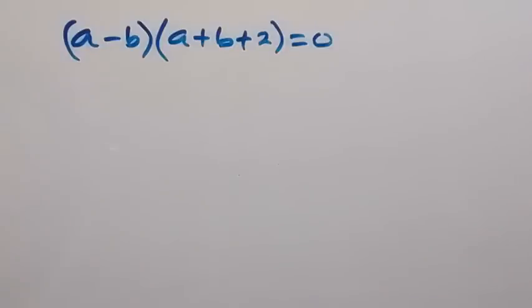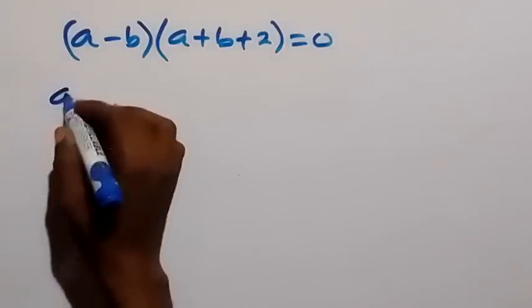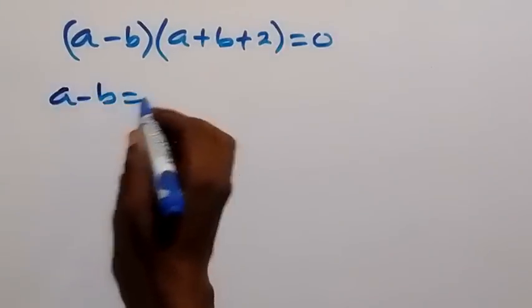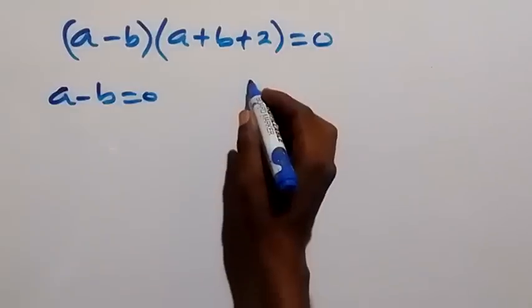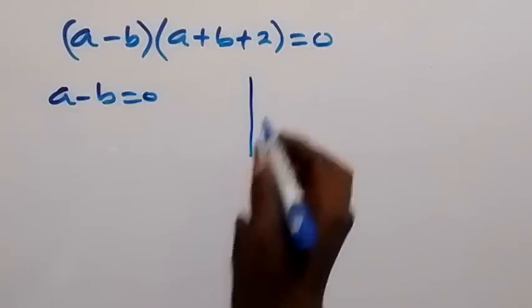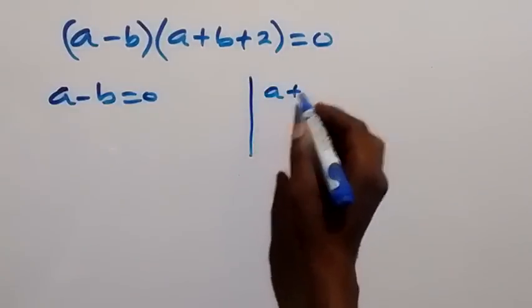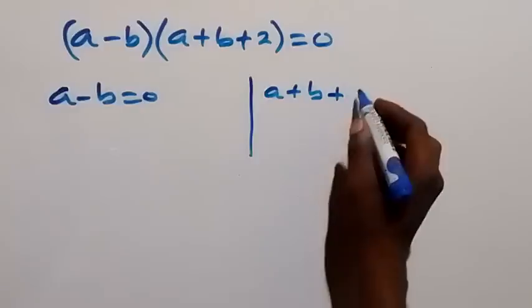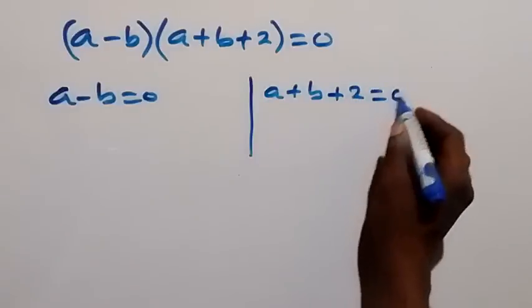We have two possible cases: either a minus b equals 0, or a plus b plus 2 equals 0.